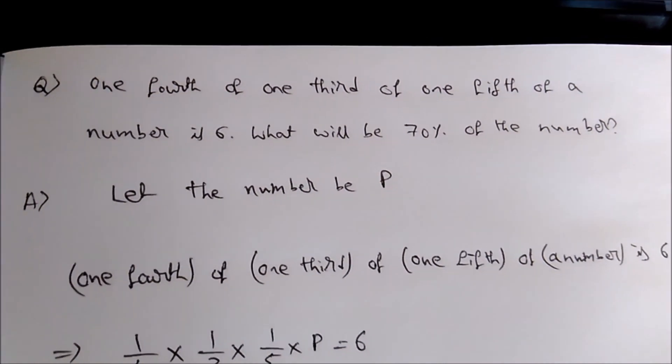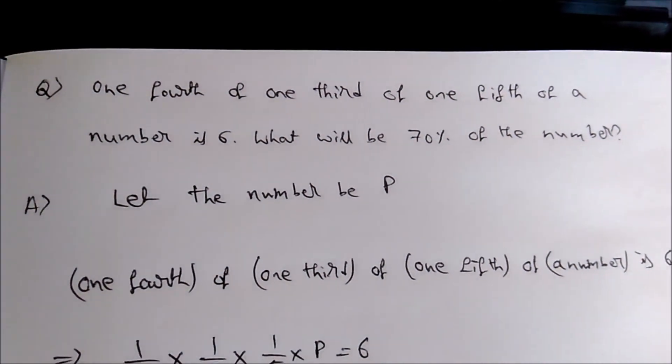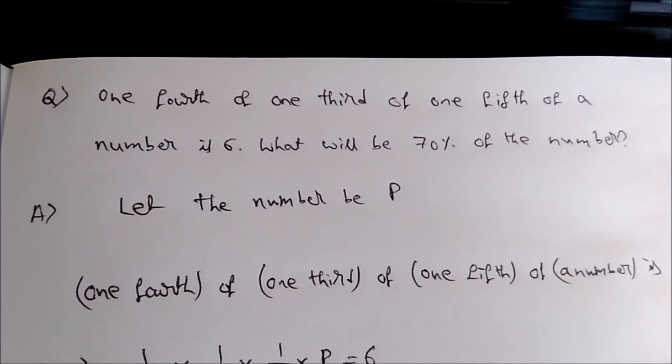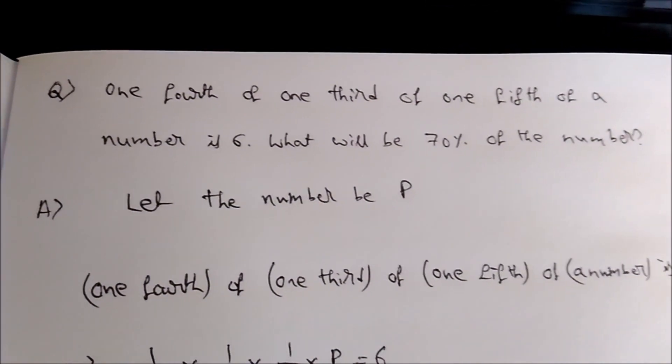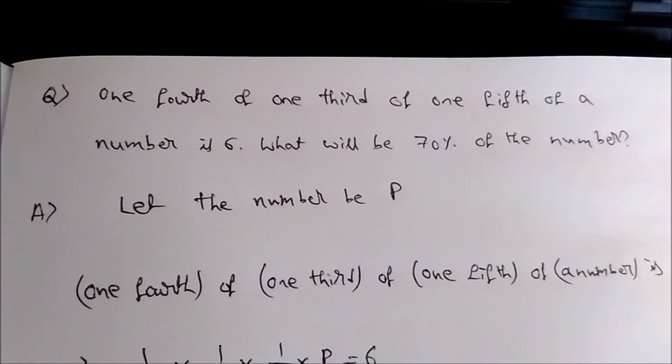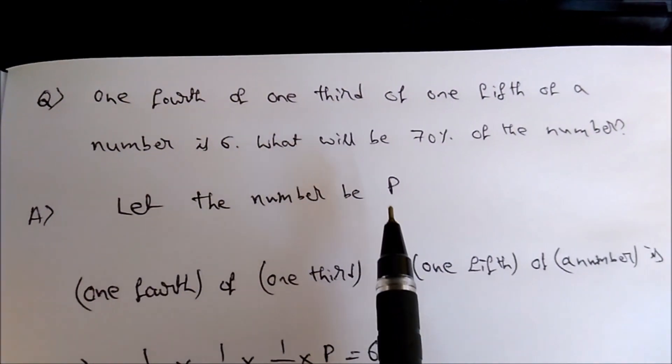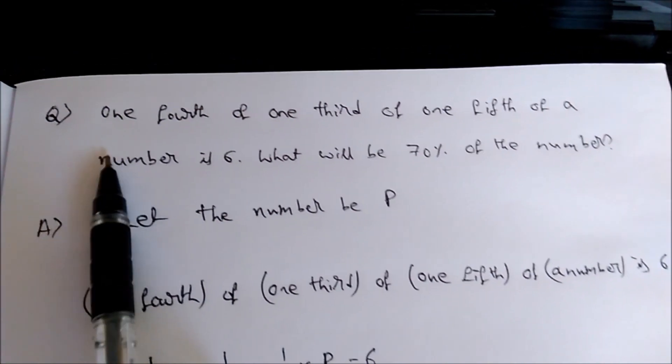Here you see they have mentioned 'the number' but they have not mentioned what is the number. So first we need to find out the number, from there we need to find 70% of the number. Now let us assume the required number be P. Now take the statement first.